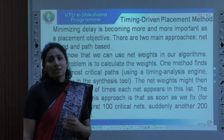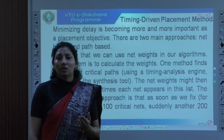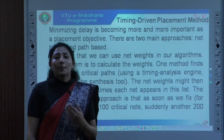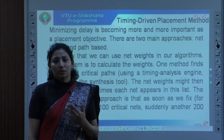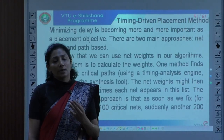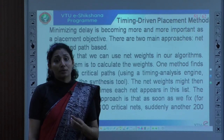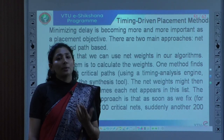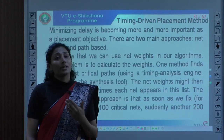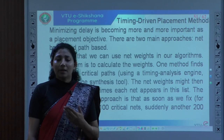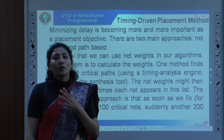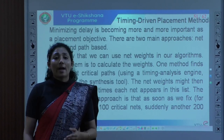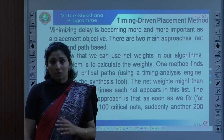At the placement stage, the physical dimensions of a net are not yet discovered. When I say physical dimension, it means the width of a net, the height of the net, whether it is a metal-1 type or metal-2 type, how many layers of metal — everything is not yet frozen during placement. It is only estimated; there is no actual data available at the placement stage.